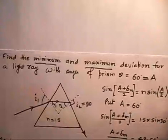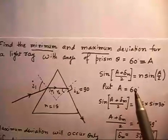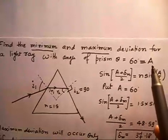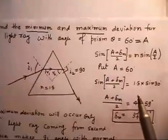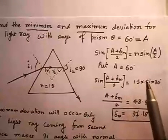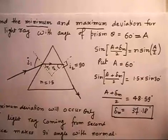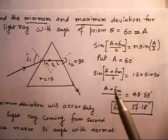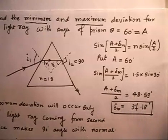For minimum deviation, everybody knows the expression: n equals sin((A + δM)/2) divided by sin(A/2). Put A equal to 60 degrees. You can find A plus delta M by 2 is equal to 48.59 degrees. Solving, you will find delta M is equal to around 38 degrees. Do your own calculation and you will find this answer.